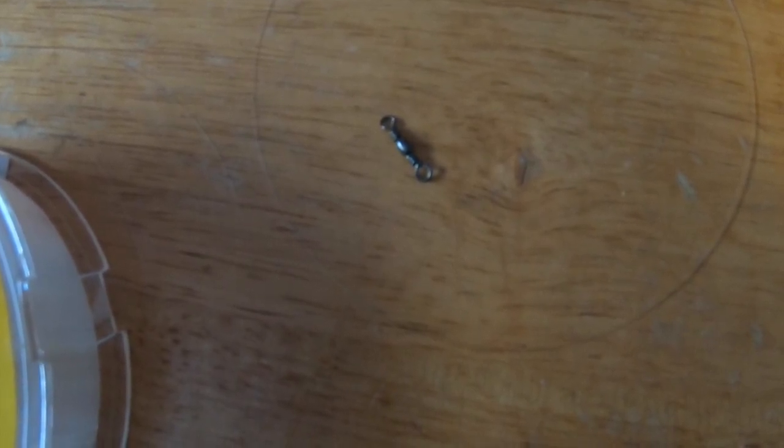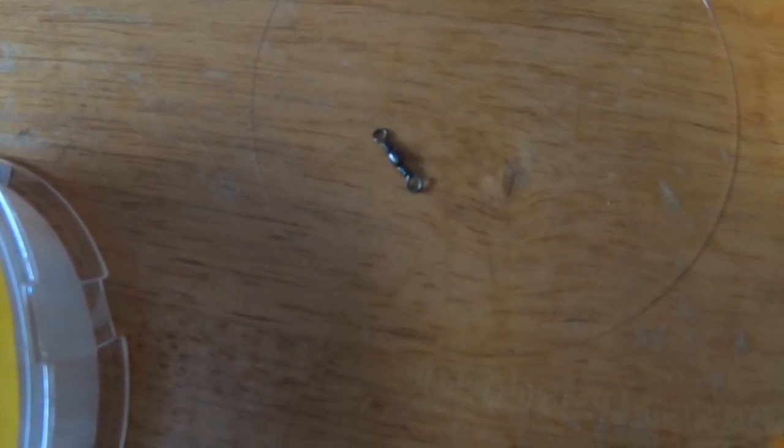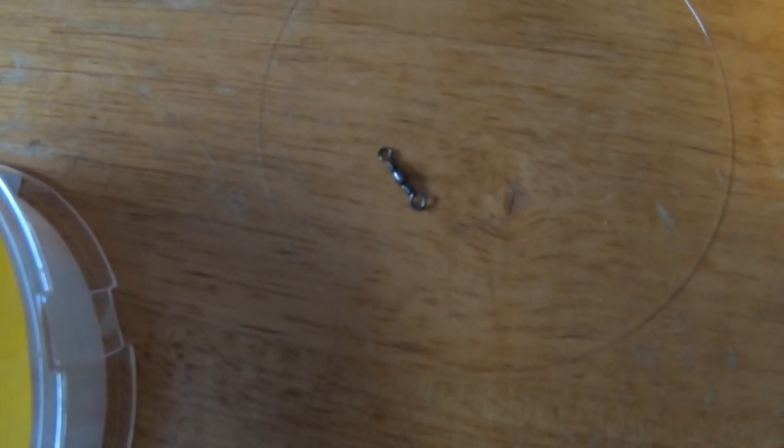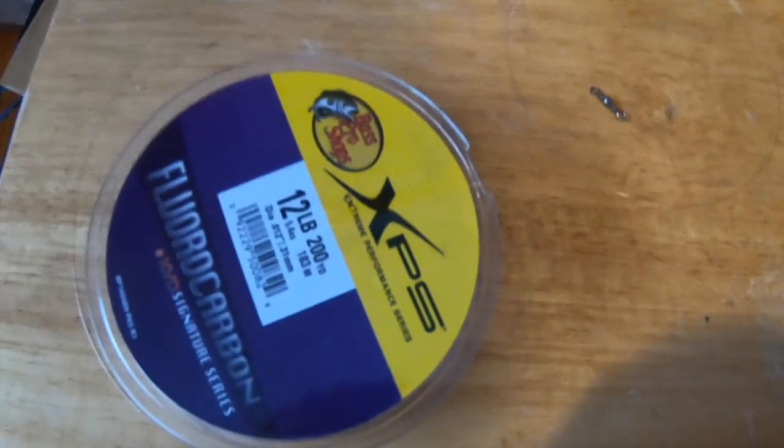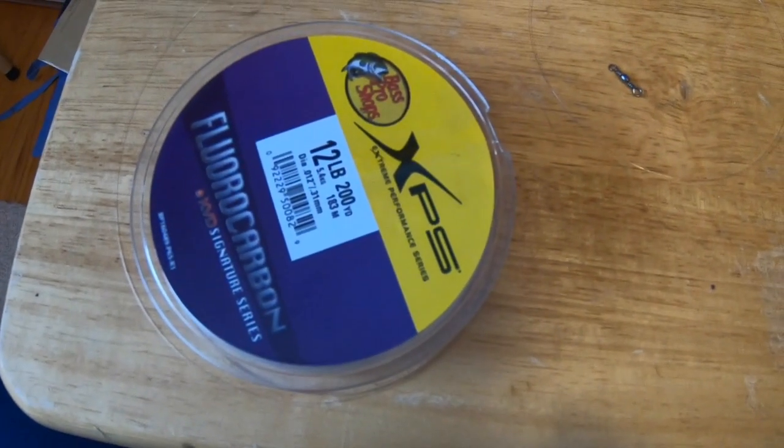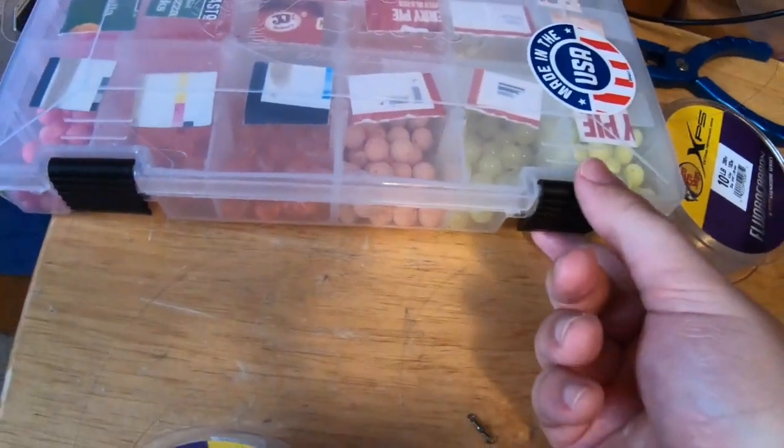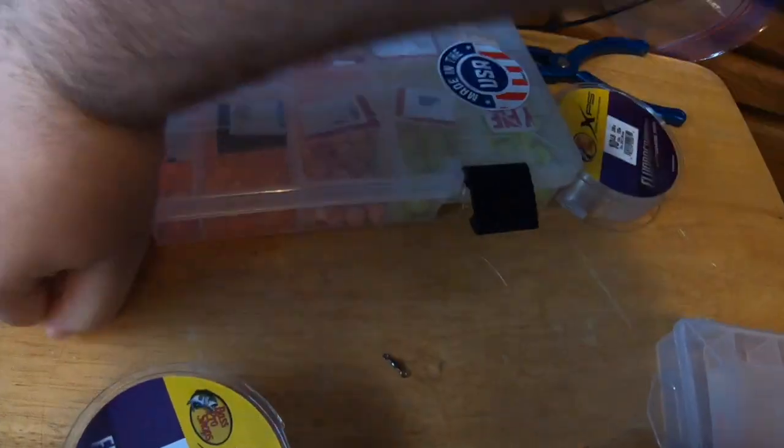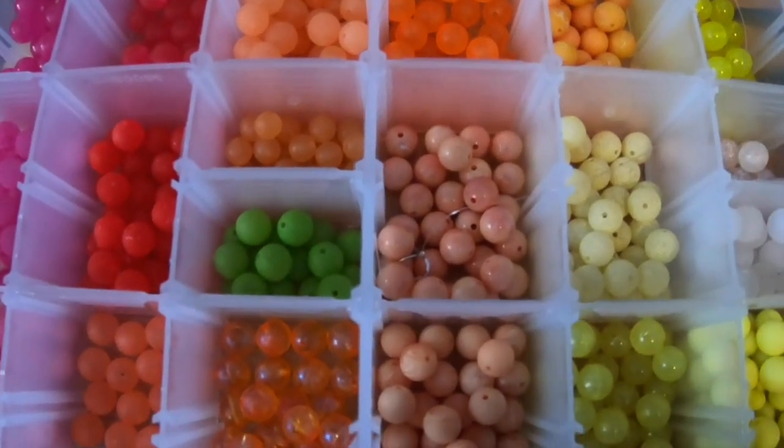I have a barrel swivel here. This is more so I can do a quick change when I'm out in the water. I don't have to retie and stuff like that, so that's an option right there for you guys as well. You don't have to use the barrel swivel. You can just tie them up on the water as you go. For today I'm tying it up as if I'm going to the lower Niagara, so I have 12 pound leader material here and then I have a 10 pound leader material over here, and then of course I have my beads.